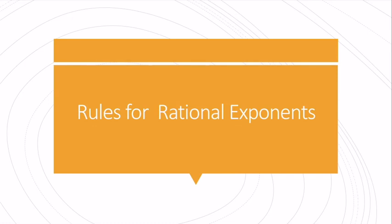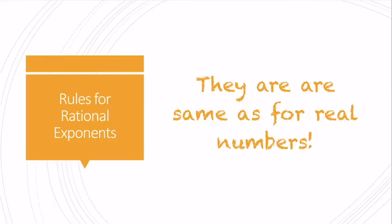Next, we're going to talk about the rules for rational exponents. What's important to remember is that the rules for rational exponents are the same as for real numbers. By real numbers, I mean the same as for whole numbers. Our rules for rational exponents are the same exponent rules you learned in chapter 4.